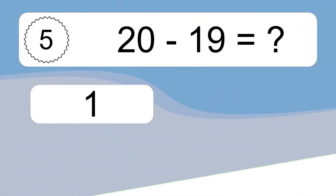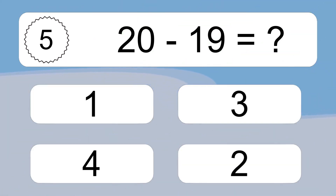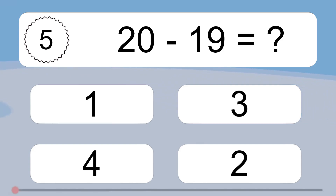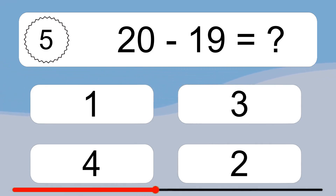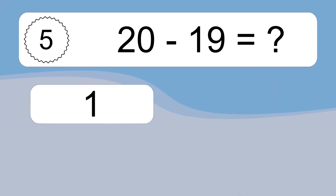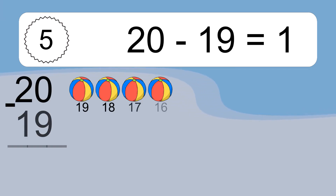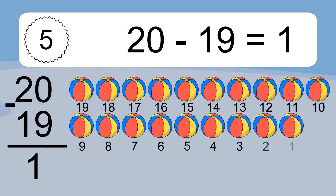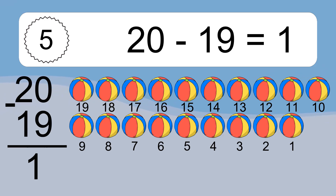20 minus 19 equals what? 20 minus 19 equals 1. Let's count it: 19, 18, 17, 16, 15, 14, 13, 12, 11, 10, 9, 8, 7, 6, 5, 4, 3, 2, 1.